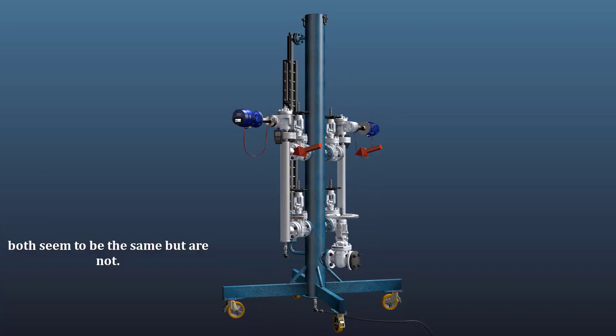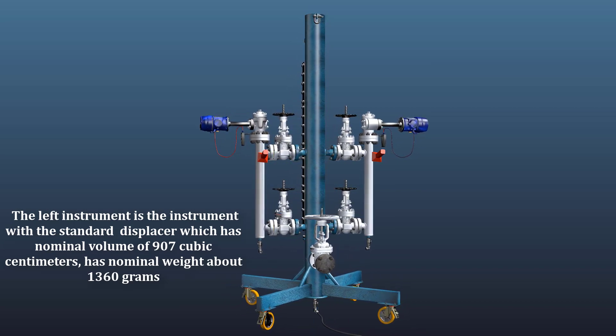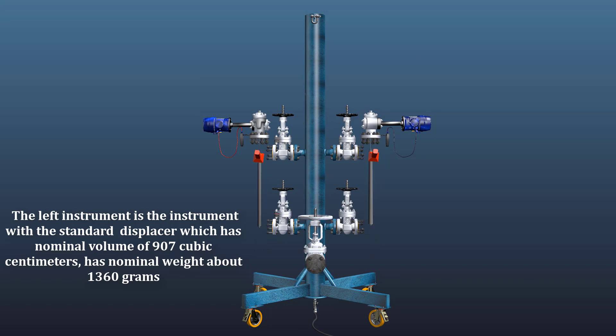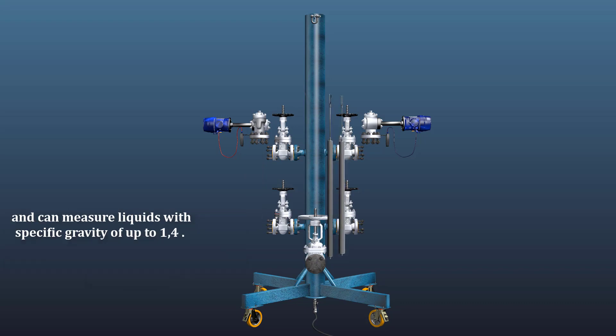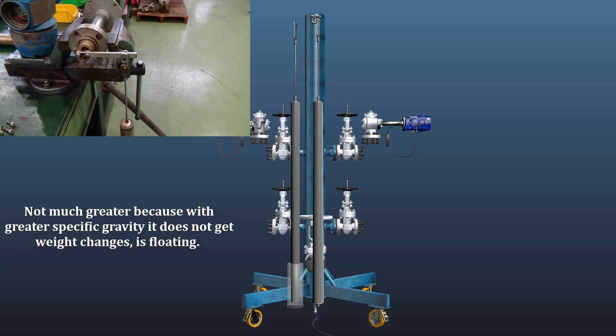Both seem to be the same but are not. The left instrument has the standard displacer which has a nominal volume of 907 cubic centimeters, a nominal weight of about 1360 grams, and can measure liquids with specific gravity up to 1.4, not much greater, because with greater specific gravity it does not get weight changes.